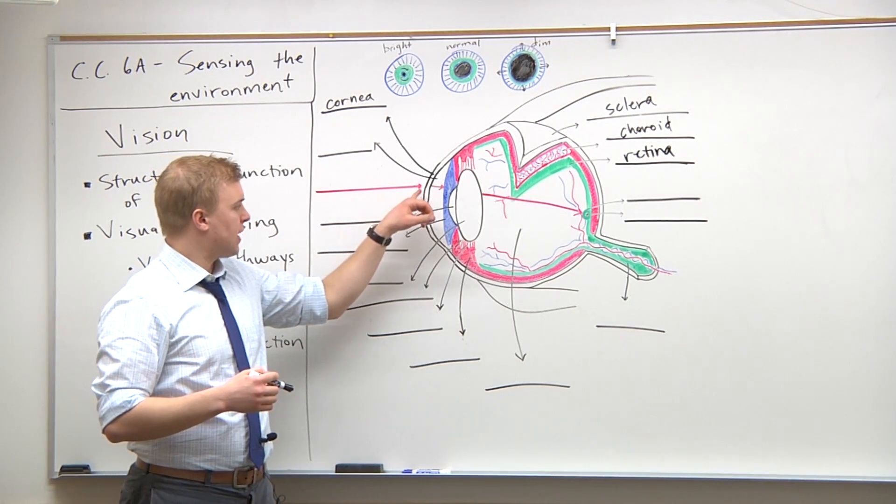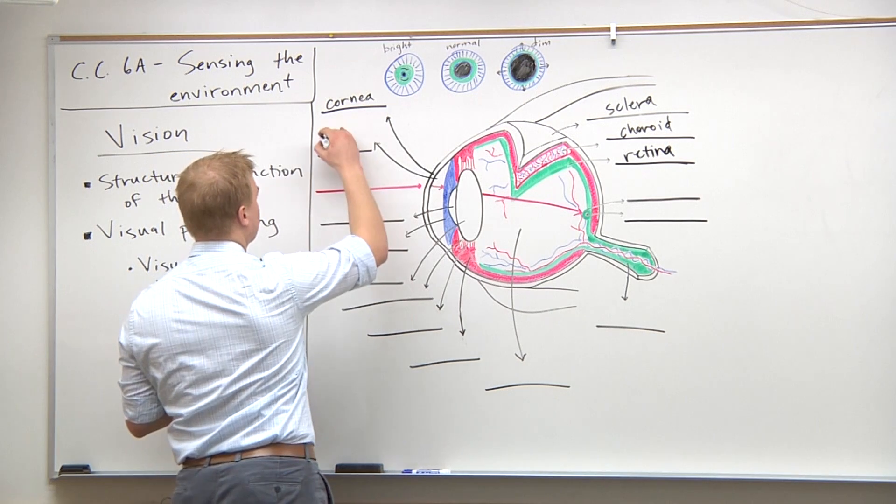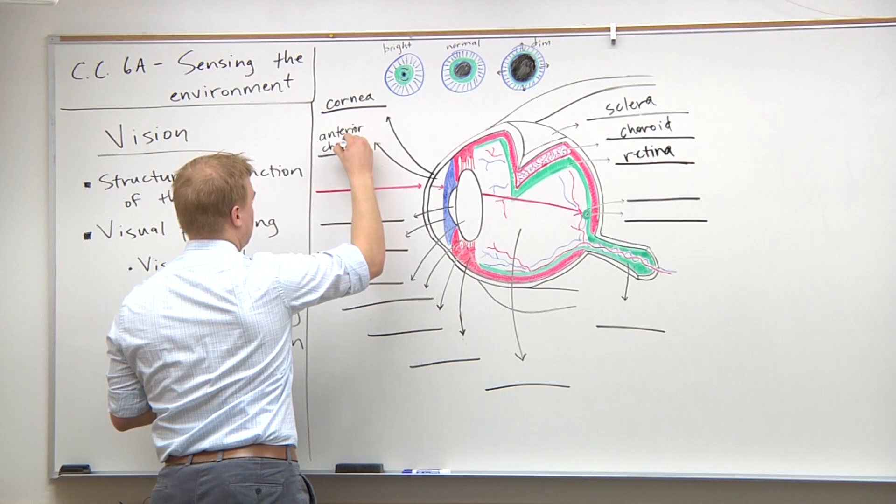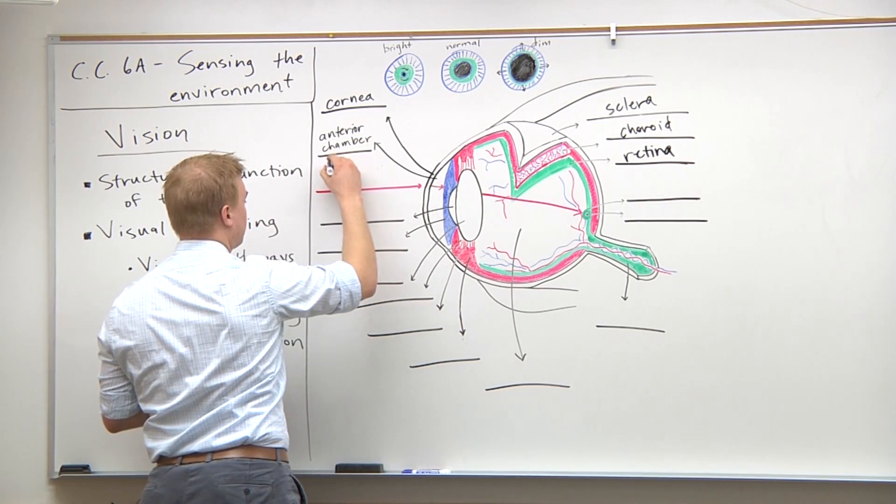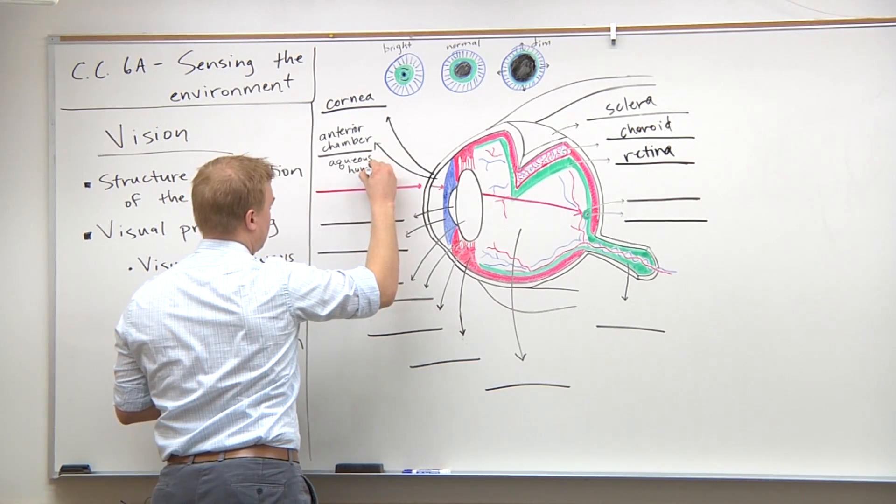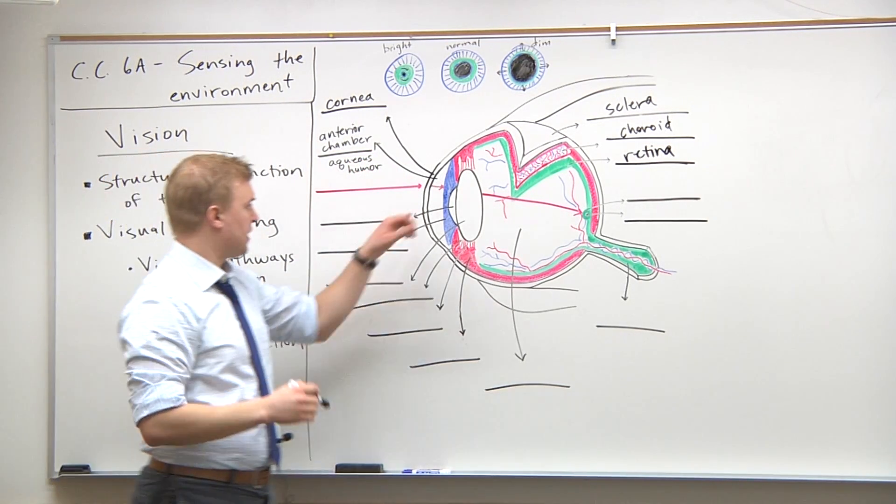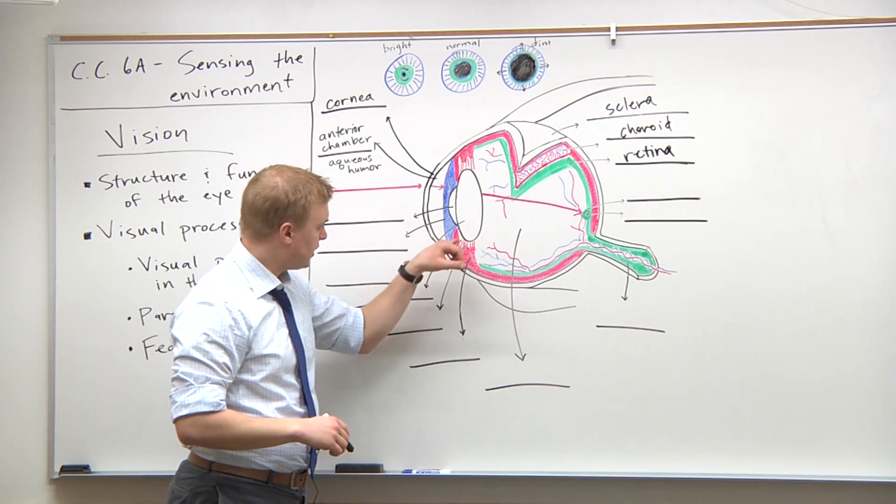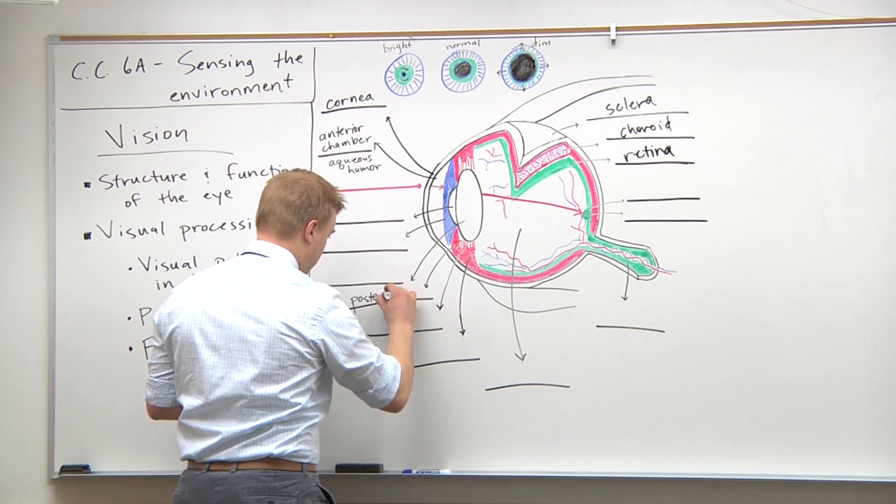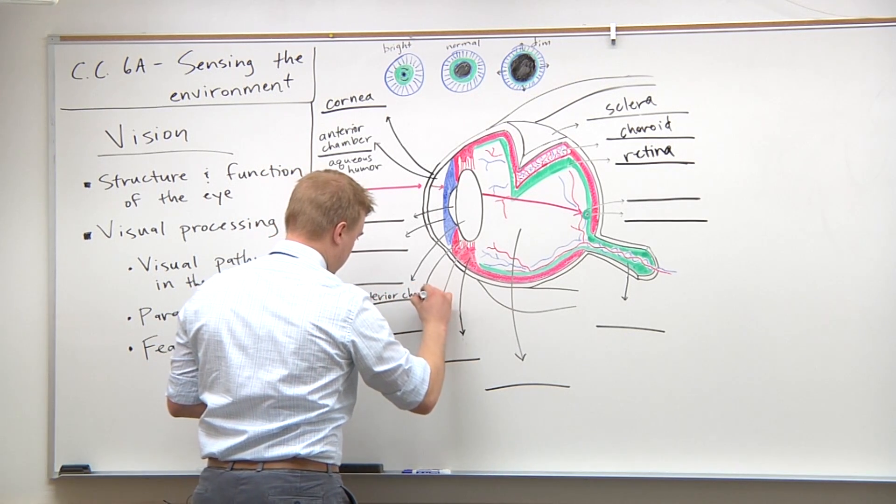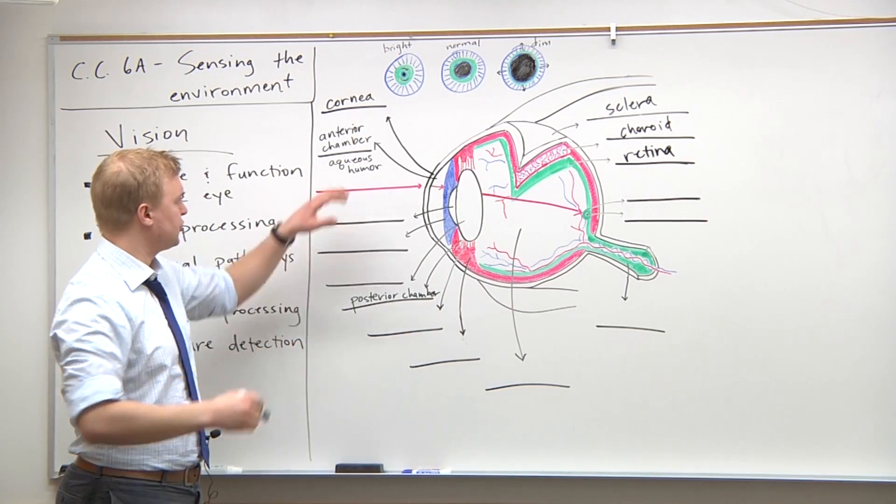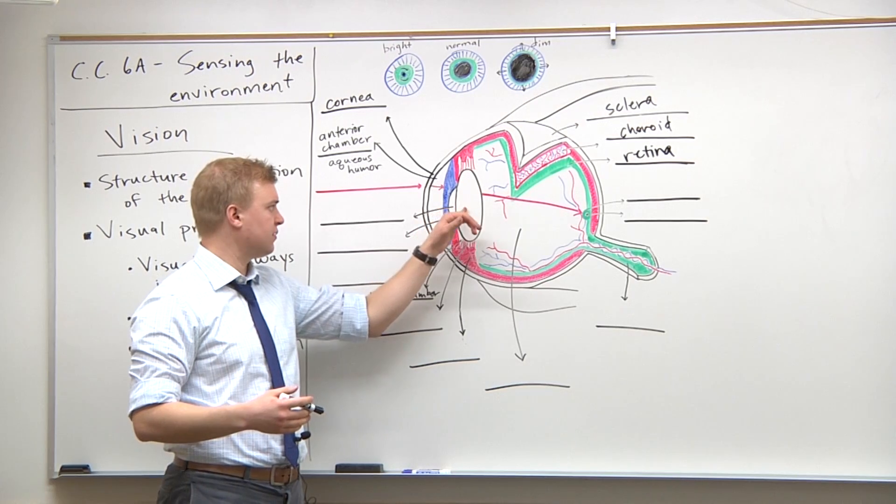As the light ray passes through the cornea, it goes through the anterior chamber. Do you remember what the anterior chamber is filled with? The aqueous humor. The aqueous humor is in the anterior chamber as well as in the posterior chamber, which is right behind the iris and in front of the lens. This aqueous humor gives nourishment to the lens and cornea.